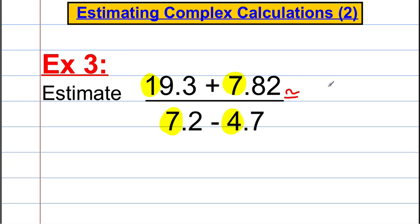This calculation is therefore approximately equal to 20 add 8 divided by 7 subtract 5. So 20 add 8 equals 28, divided by 7 subtract 5 equals 2. And 28 divided by 2 is clearly equal to 14. And that is our approximate or estimate for the following calculation.